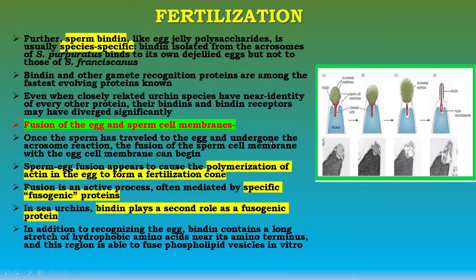Once the sperm has traveled to the egg and undergone the acrosome reaction, fusion of the sperm cell membrane with the egg cell membrane can begin. Sperm-egg fusion appears to cause polymerization of actin in the egg to form a fertilization cone. Fusion is an active process, often mediated by a specific fusogenic protein. In sea urchin, bindin plays a second role as a fusogenic protein; in addition to recognizing the egg, bindin contains a long stretch of hydrophobic amino acids near its amino terminus, which is able to fuse phospholipid vesicles in vitro. Under the ionic conditions present in the mature unfertilized egg, bindin can cause the sperm and egg membranes to fuse.